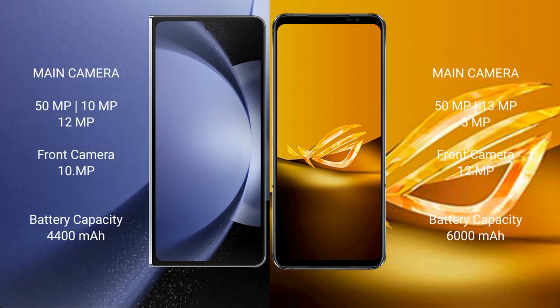Samsung Galaxy Z Fold 6 has a triple rear camera setup: 15MP plus 10MP plus 12MP, and a 12MP front camera, with a 10MP cover camera. It has a 4400mAh battery with 45W fast charging support. Asus ROG Phone 6D has a 6000mAh battery with 65W fast charging support.